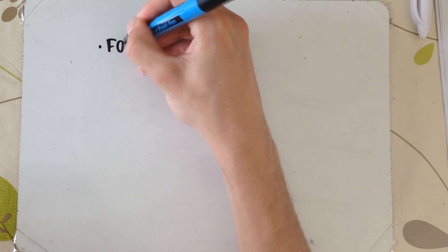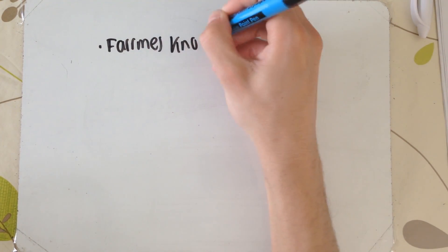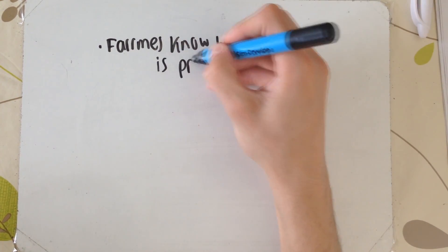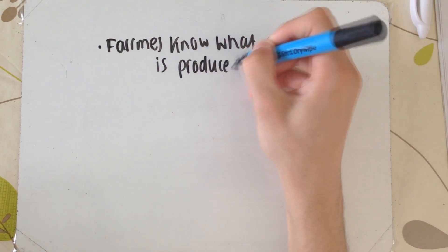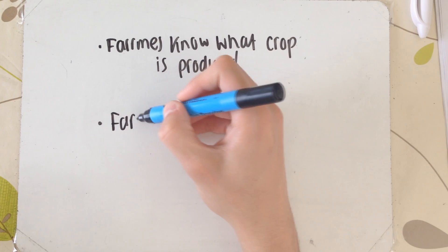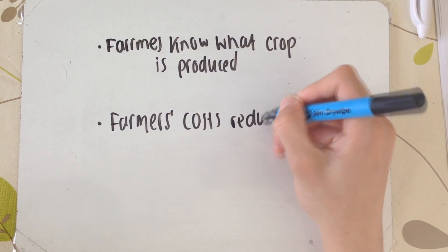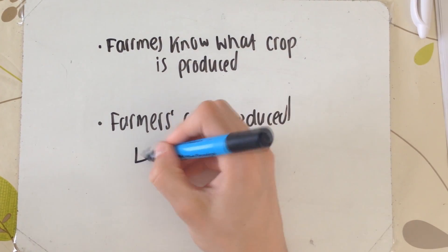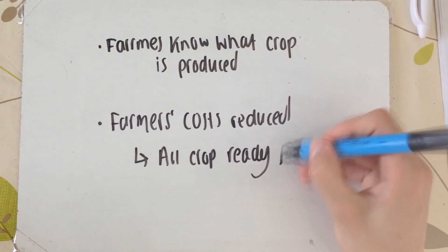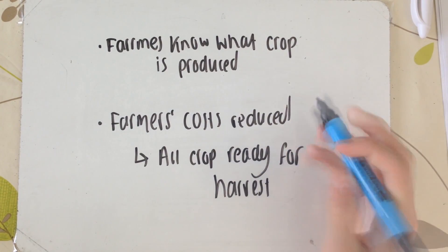There are a few benefits to micropropagation. The first is that farmers know exactly what crop is going to be produced — if they're all identical, they can tell exactly what it will be like. Farmers' costs are also reduced because if the plants are genetically identical, they should grow at the exact same rate provided they're given the same nutrients, so they'll all be ready for harvest at the same time.